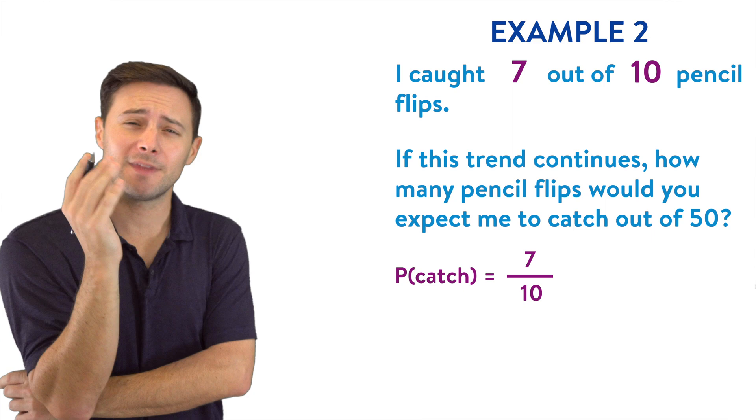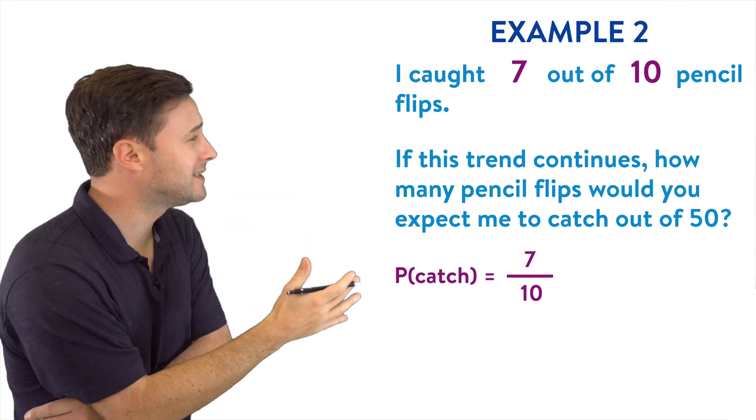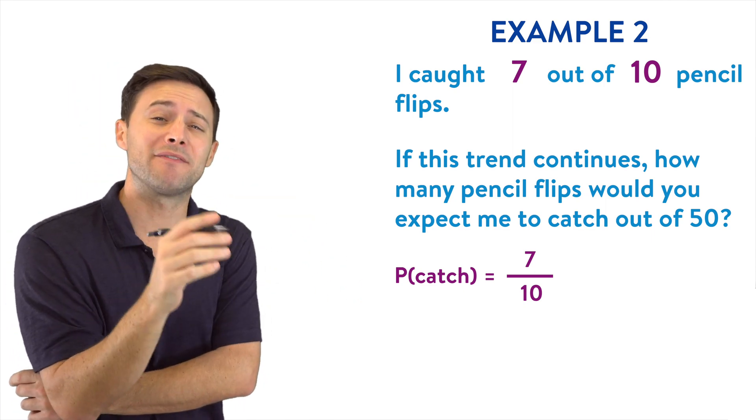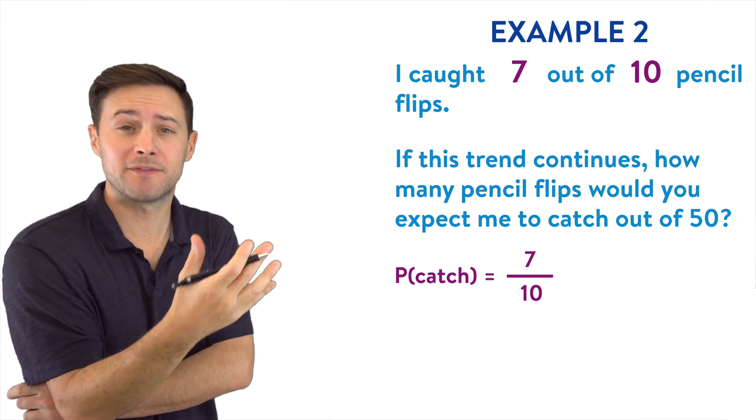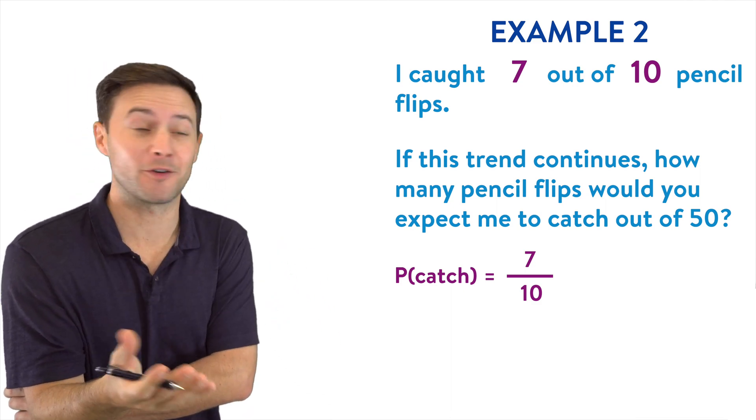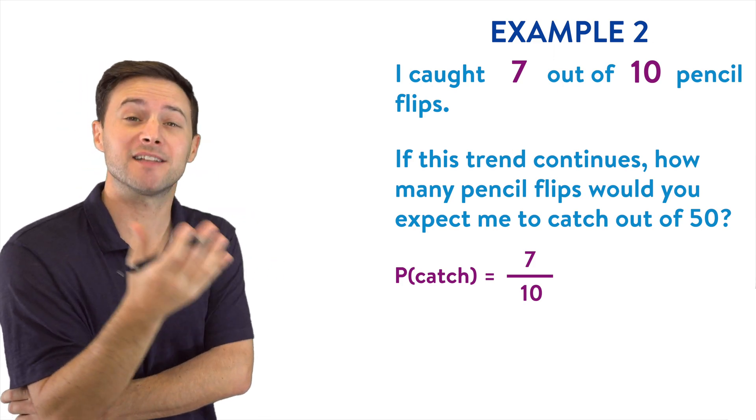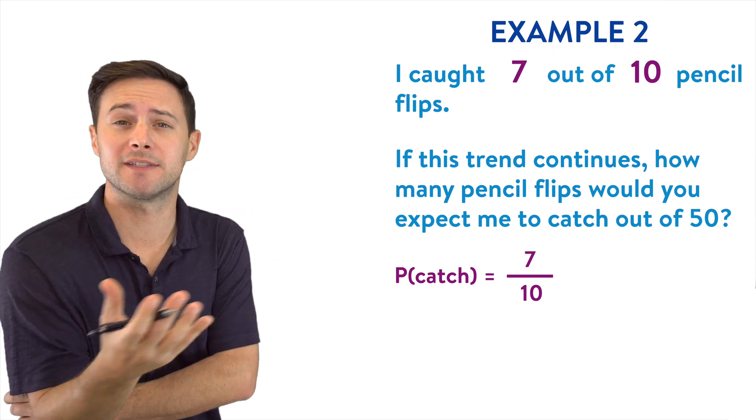If I think about it, that experimental probability means I caught seven tenths of the flips. Seven tenths or 70 percent or 0.7. I caught 70 percent of them or seven tenths of the flips.